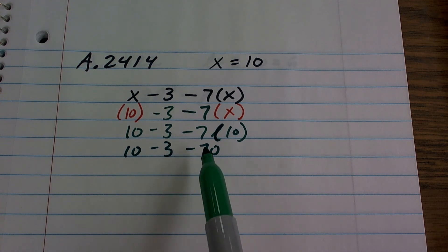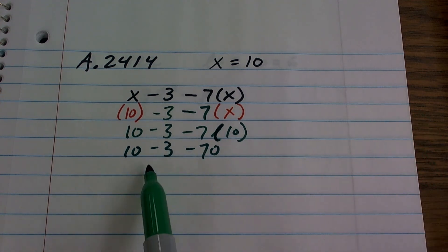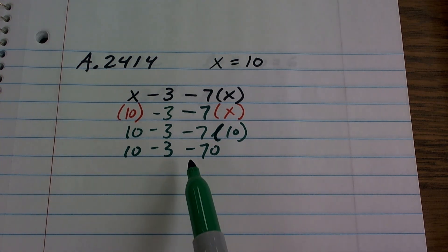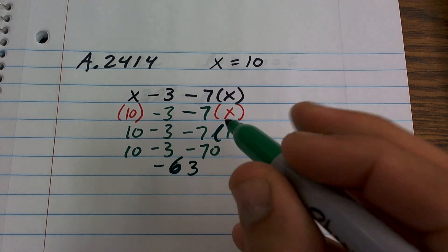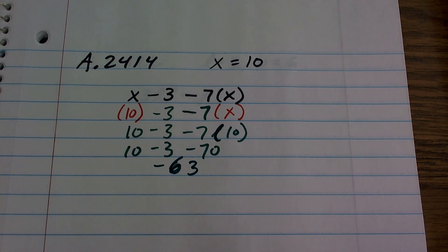So I have 10 minus 3 minus 70. Well, remember, now using order of operations, I have to go from left to right. So 10 minus 3 is negative, I'm sorry, 10 minus 3 is 7. And then 7 minus 70 is going to be a negative 63. And that's going to be my final solution.